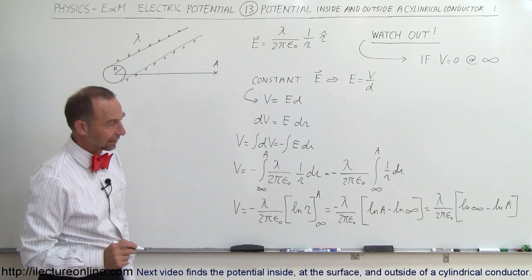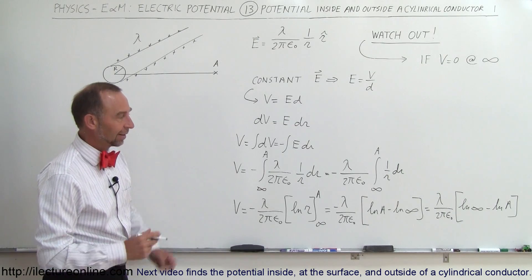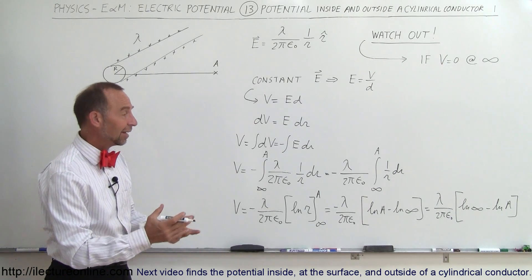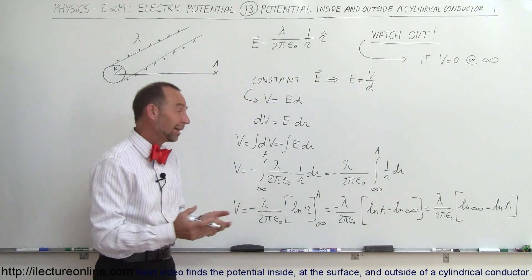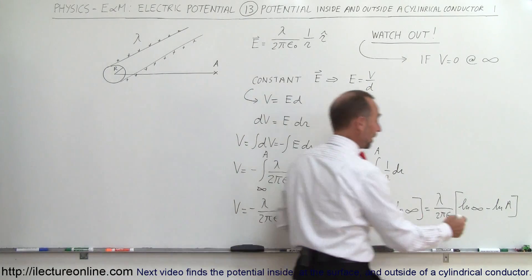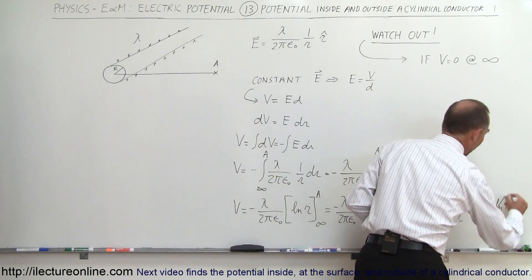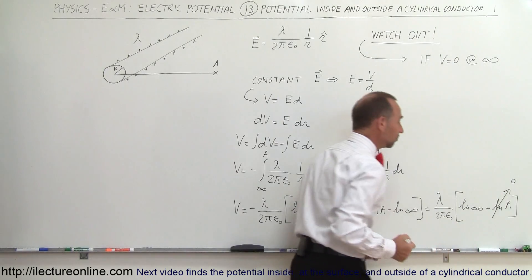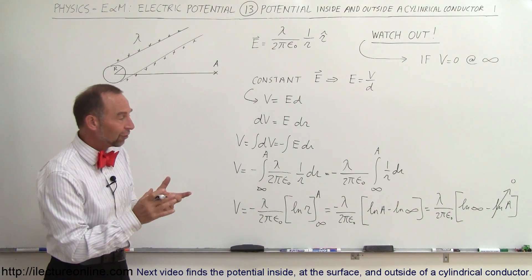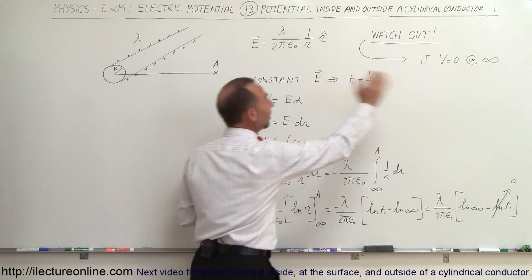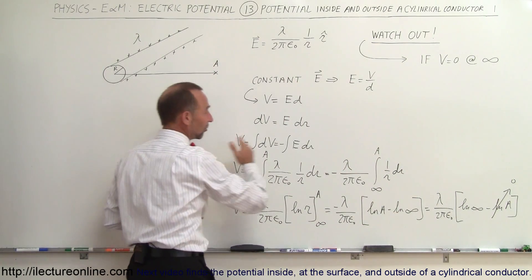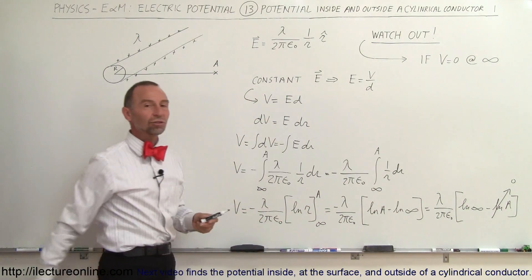And notice, unfortunately, the natural log of infinity is infinity. If I subtract the natural log of A from that, it makes no difference, so in relation to this number, this is virtually whatever it is. So, the potential difference between a point at infinity and any point close to the conductor is an infinite potential difference.